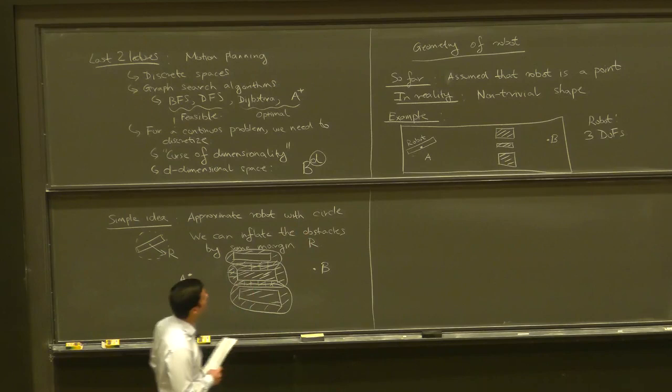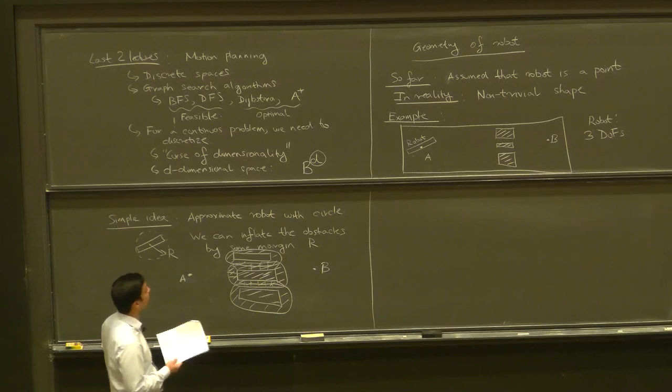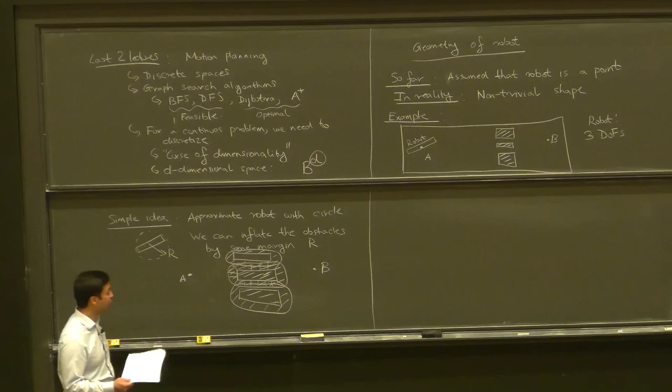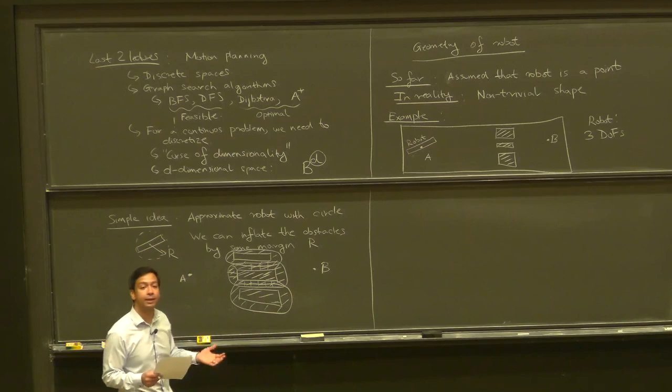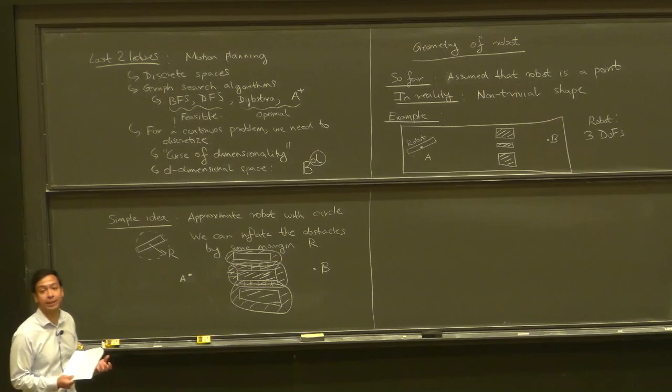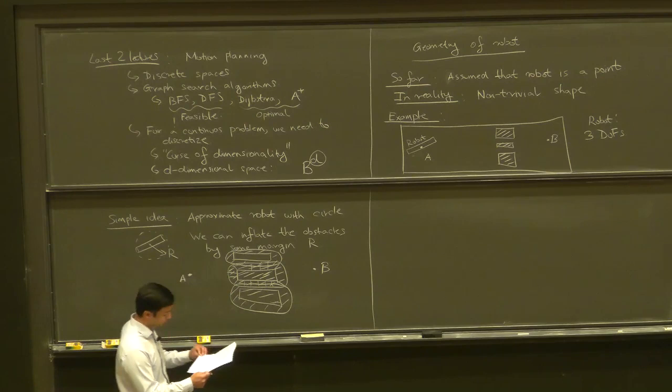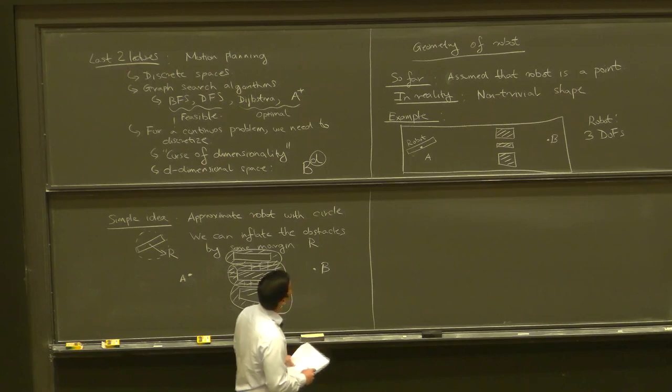This idea is actually pretty powerful and popular — widely used — and it's something you'll use in the next lab when doing motion planning for the Crazyflie robot. This can work if the obstacles are relatively well separated, but if you have obstacles that are close together, you really need to think about the actual shape of the robot to solve the motion planning problem.